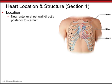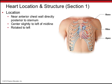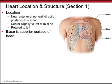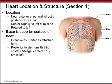Where is the heart? The heart lies in the thoracic cavity directly behind the sternum between the lungs in a region called the mediastinum. The chamber inside the mediastinum in which the heart sits is called the pericardial chamber. It's slightly to the left of midline, rotated to the left. We define the base as the superior aspect of the heart where the great vessels attach.